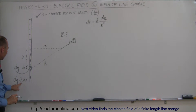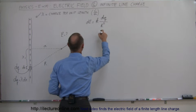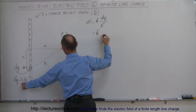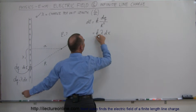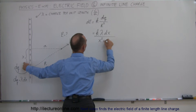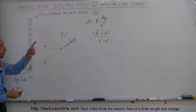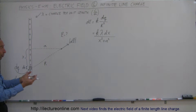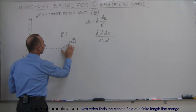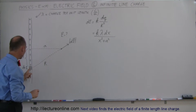Now DQ is equal to the linear charge density times DX. And instead of R, we can write what R is equal to, so this can be written as K times the linear charge density times DX divided by X squared plus A squared. R is the square root of X squared plus A squared, but since R is squared, squaring the square root negates it, and we get X squared plus A squared. So that is the magnitude of the electric field at that location due to this small charge.